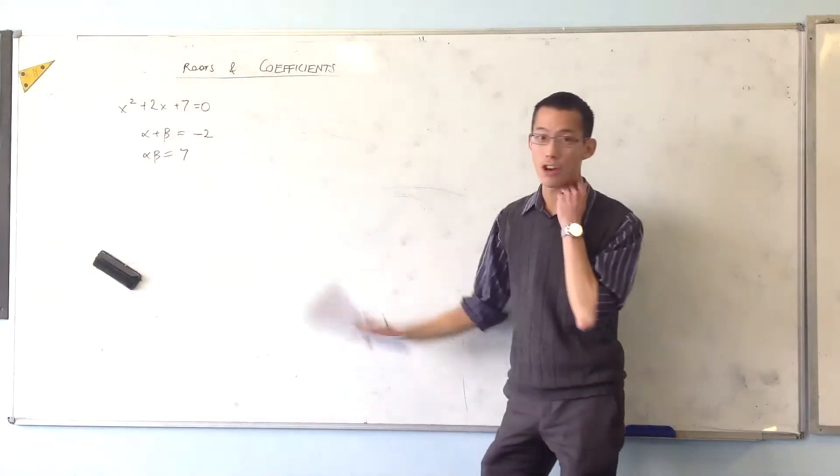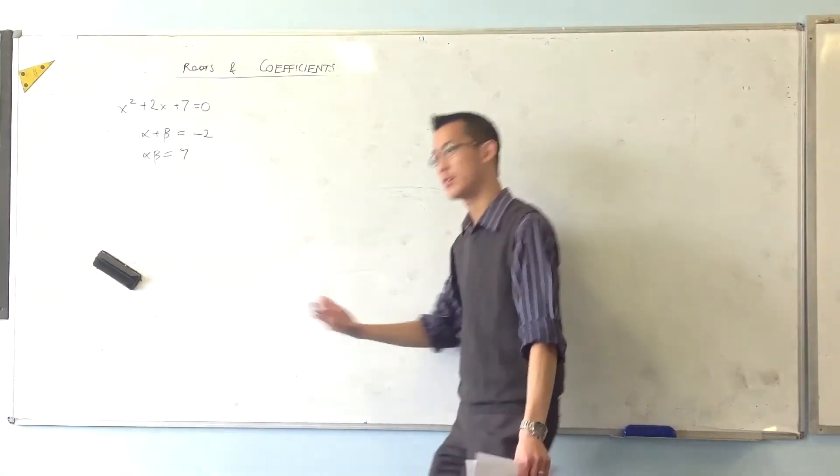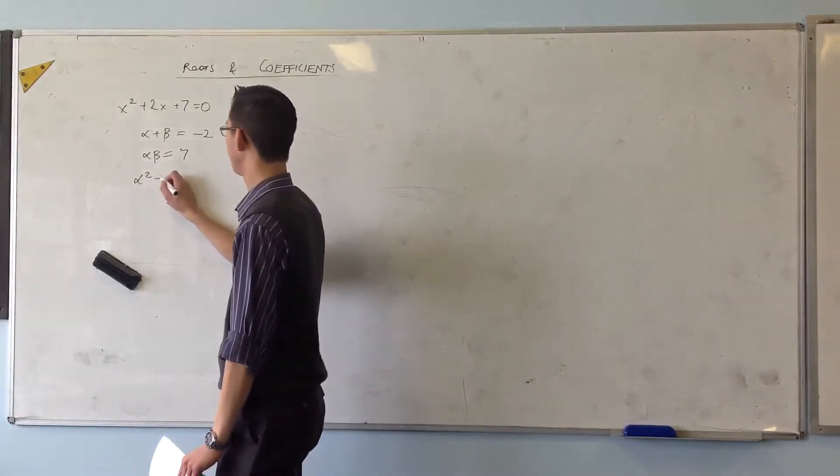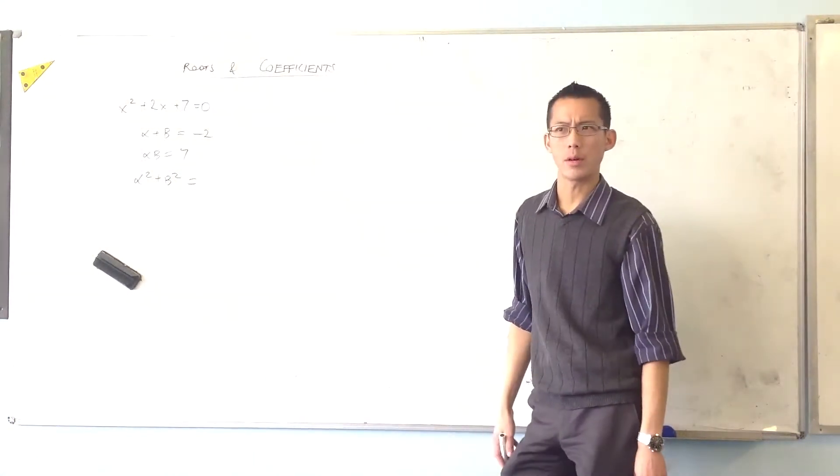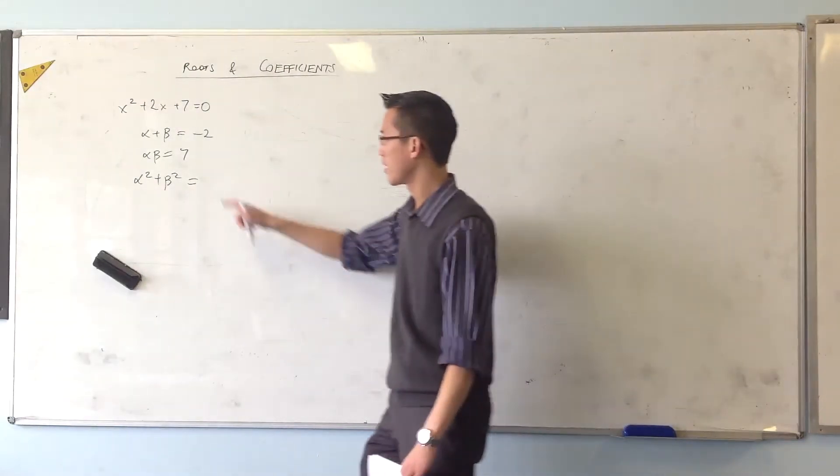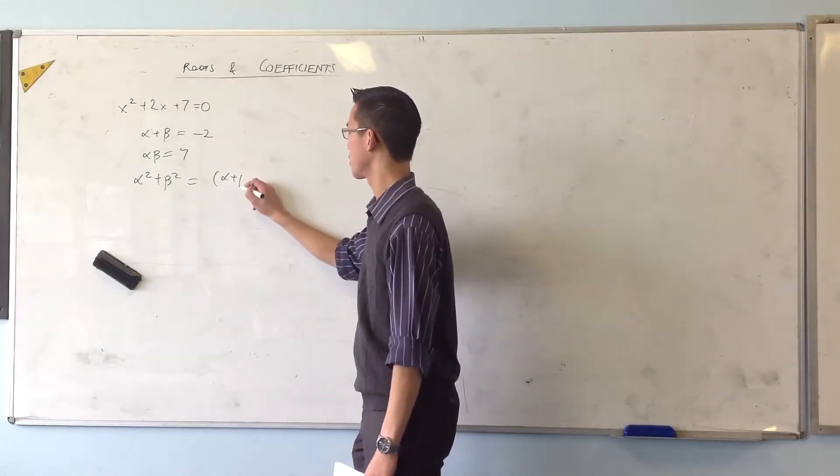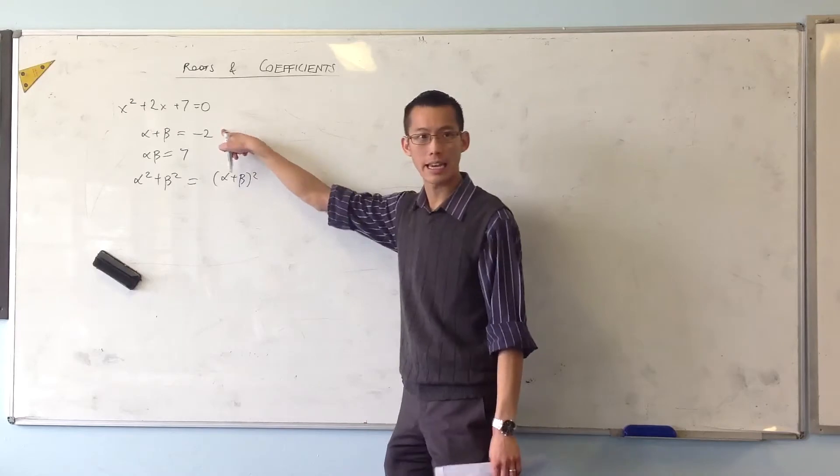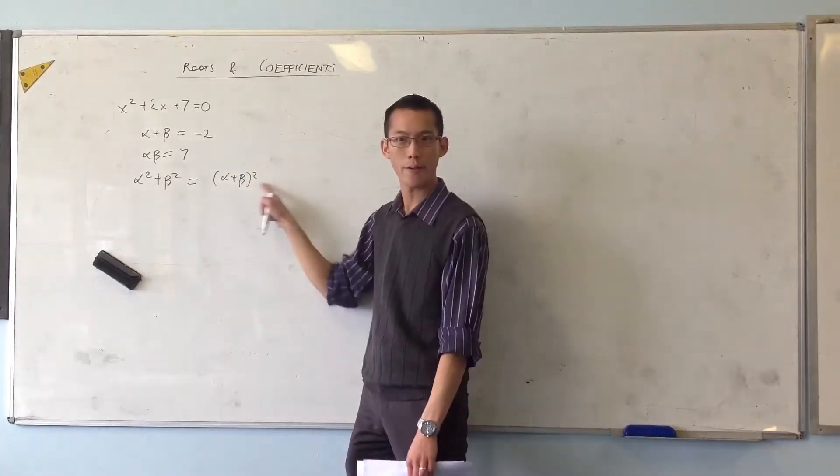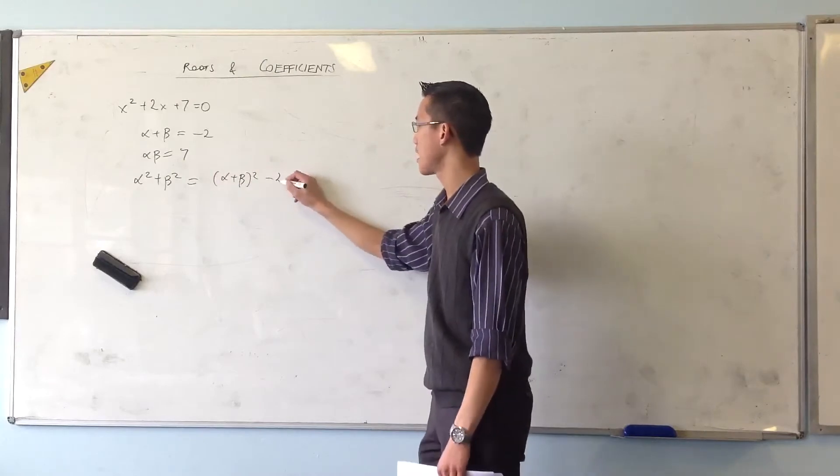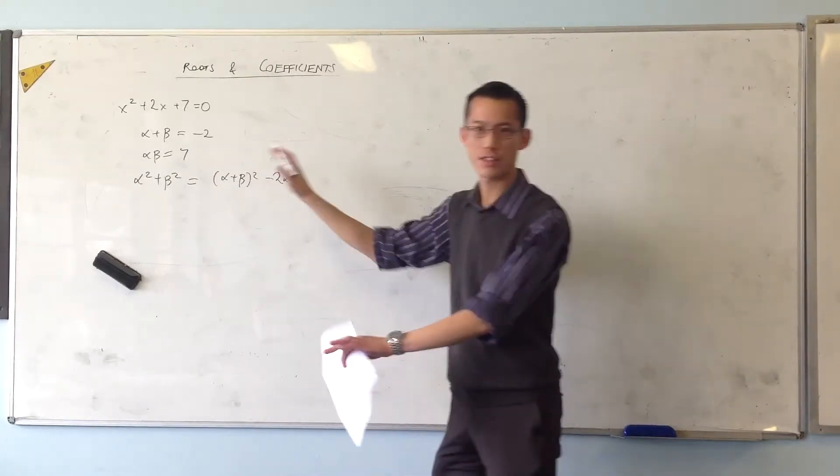You guys already know you can combine these in all kinds of different ways. For instance, I might ask you to work out alpha squared plus beta squared. What would that be equal to? What combination do we use? Alpha plus beta squared minus 2 alpha beta. Good. So you take this to get the alpha and the beta individually squared, but you end up having the 2 alpha beta in the middle, which is why you compensate by doing this.